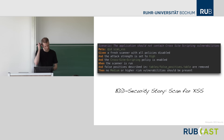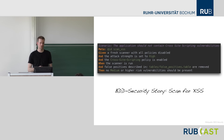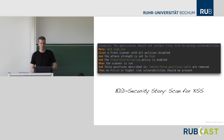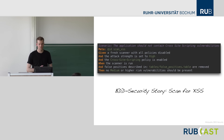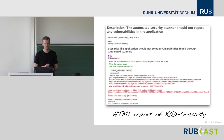In BDD Security you define stories in the given-when-then mantra — for example: given a fresh scanner with all policies disabled, and the attack strength set to high, and the cross-site scripting policy is enabled; when the scanner is run and false positives are removed; then no medium or higher risk vulnerabilities should be present. These self-expressing story files translate into ZAP configuration, ruling out defined false positives and triggering a build break if the assertion is not fulfilled.